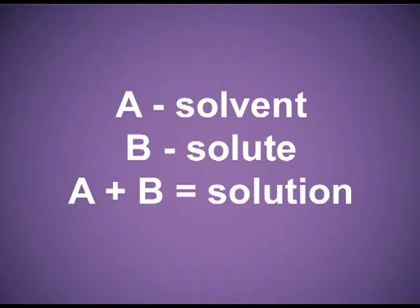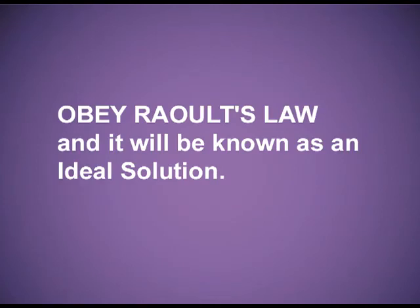I am taking A as solvent and B as solute, and when I mix A and B, I get a solution. Ideal solutions are solutions which obey Raoult's Law. The reason they obey it is that when the solvent-solvent interactions, solute-solute interactions, and after mixing the solute-solvent interactions are all of the same type, the solution will obey Raoult's Law and is known as an ideal solution.